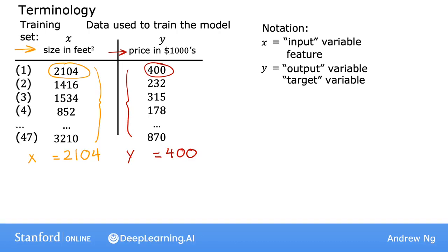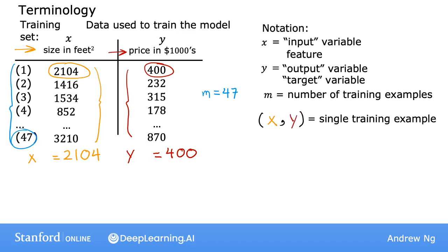So the dataset has one row for each house, and in this particular training set, there are 47 rows, with each row representing a different training example. We're going to use lowercase m to refer to the total number of training examples, and so here m is equal to 47. To indicate a single training example, we're going to use the notation parentheses x comma y. So for the first training example, x comma y, this pair of numbers is 2,104 comma 400. Now we have a lot of different training examples, we have 47 of them in fact.